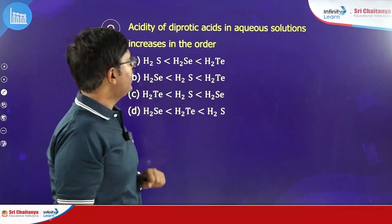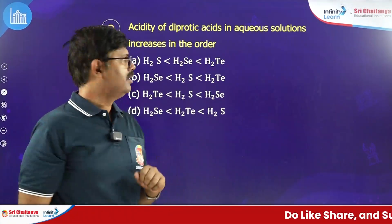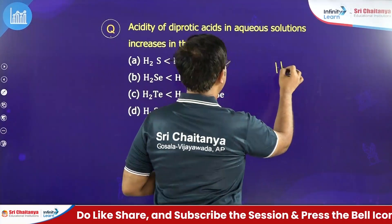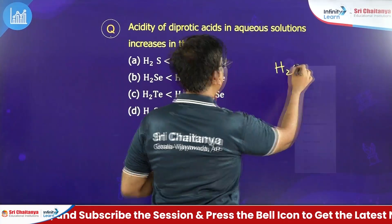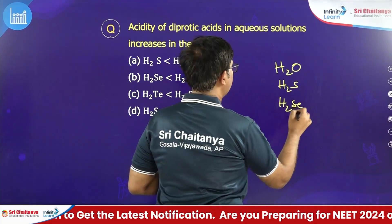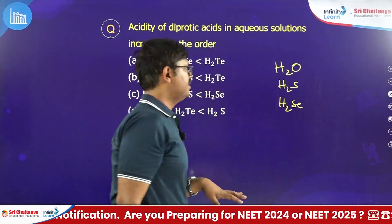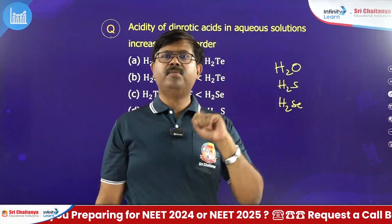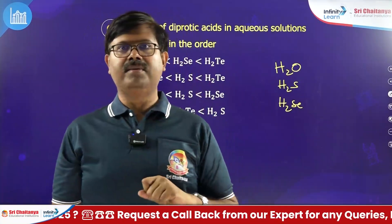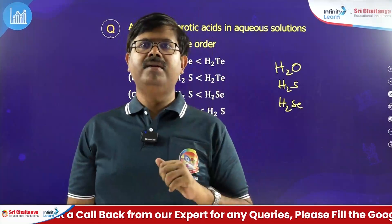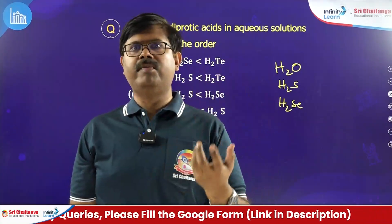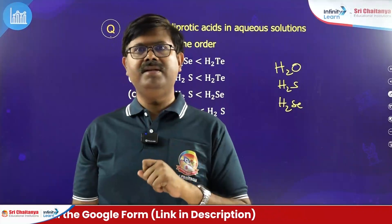The acid dissociation of diprotic acids in aqueous solutions increases in which order? Among these hydrides — H2O, H2S, H2Se — if you look at the bond length: O-H bond, S-H bond, Se-H bond, bond length is increasing down the group. When bond length increases going down, it is easy to break those bonds, as bond energy decreases.